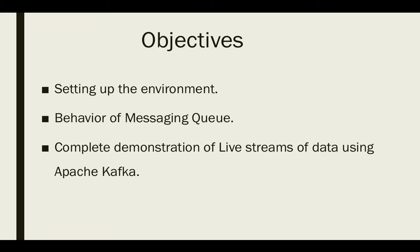For this video, we have three major objectives. The first is setting up our environment — installing Apache Kafka and performing operations with it. The second is to understand the behavior of the messaging queue and demonstrate how a consumer and a producer interact. The third and final objective is a complete demonstration of live streaming of data using Apache Kafka.